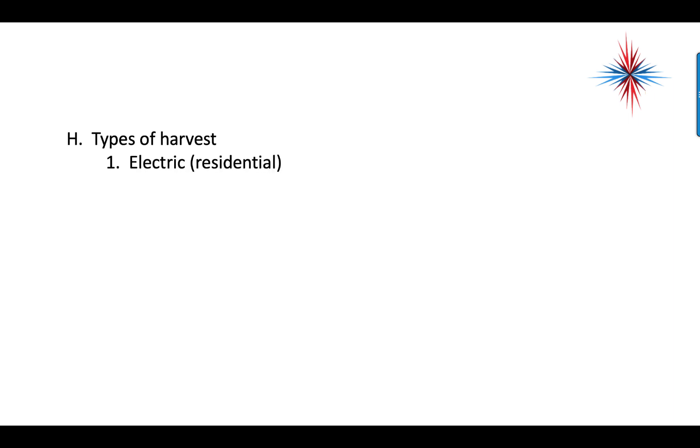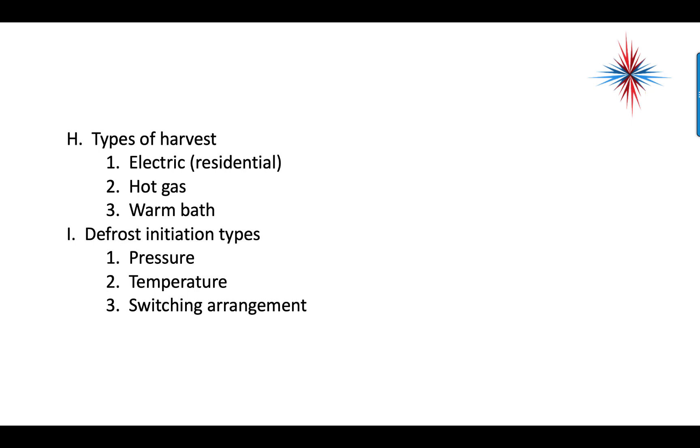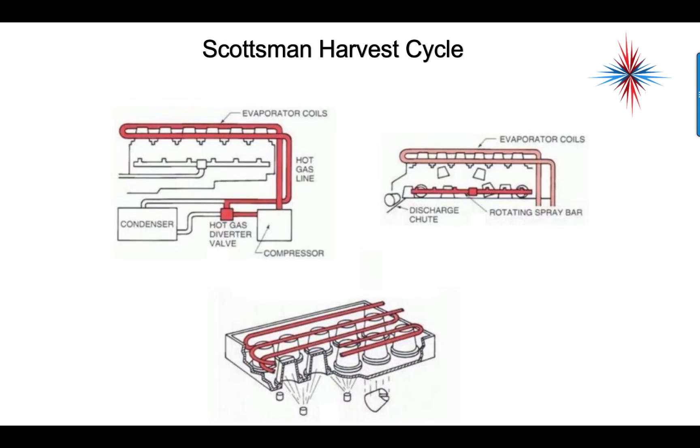The types of harvest could be electric, most often seen in residential ice machines; hot gas, most often seen in commercial; or a warm bath, which I haven't seen in years. Defrost initiation, which is harvest initiation, could be done by pressure, could be done by temperature, and could be done by a switching arrangement, which could be a probe or a timer.